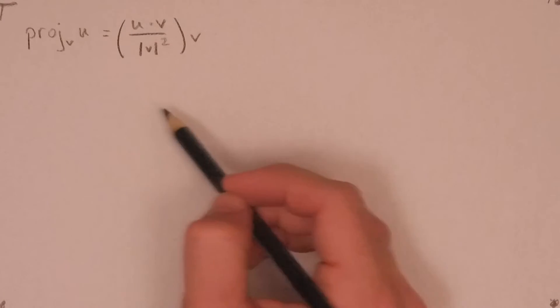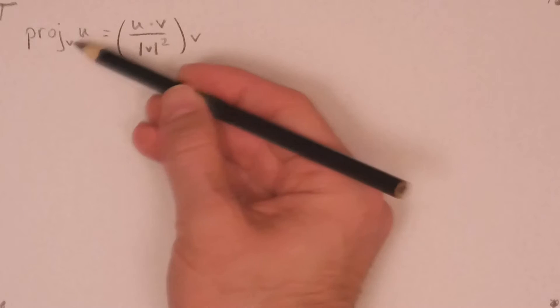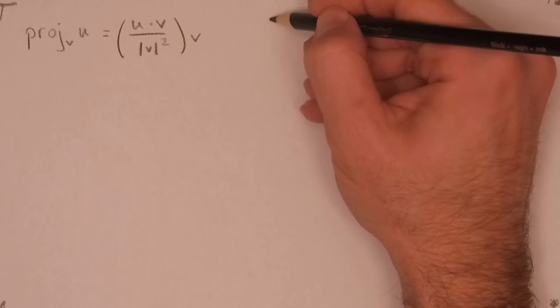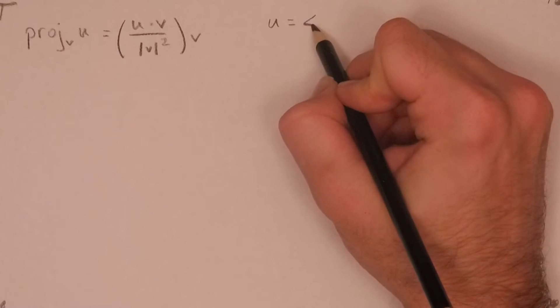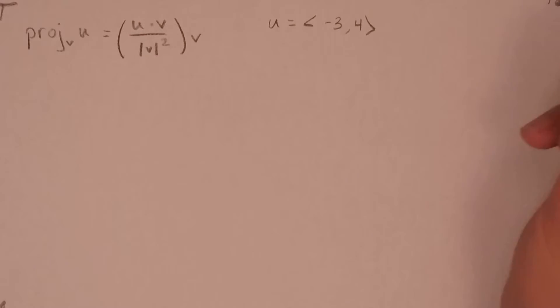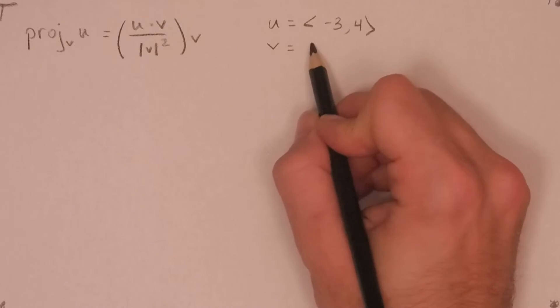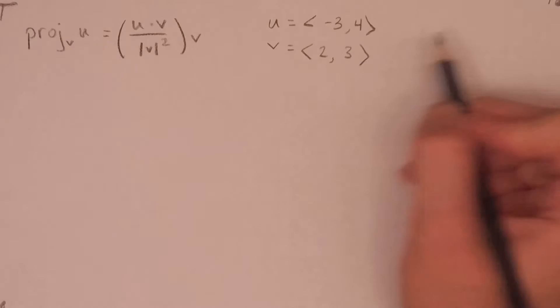So let's go ahead and go through the process of finding the projection of some u on v. Let's make up an example here. Let's call u the vector that is negative 3, 4. And we're going to have vector v that is 2, 3.